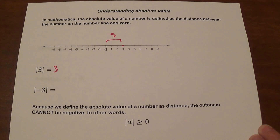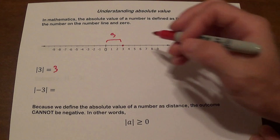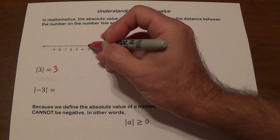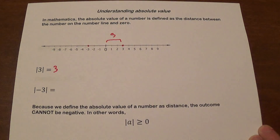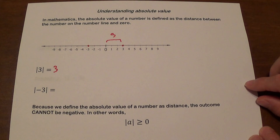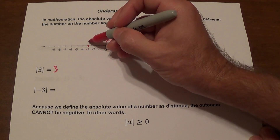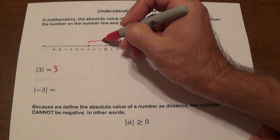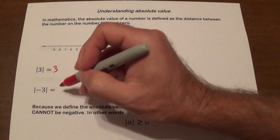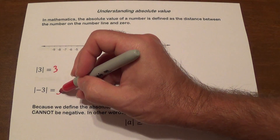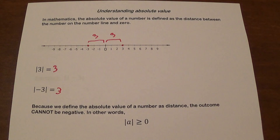What is the absolute value of negative 3? Negative 3 is here. It's not the same number, but it is actually the same distance from 0. The distance here is also 3. The absolute value of negative 3 is also 3.